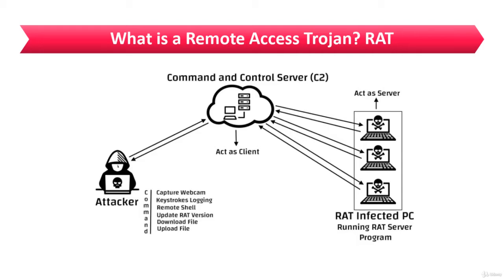A common example of a remote access Trojan is NJRAT. NJRAT can download and execute additional malware, execute shell commands, read and write registry keys, capture screenshots, log keystrokes, spy on webcams, and many more capabilities.